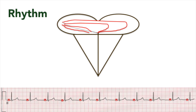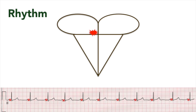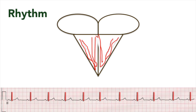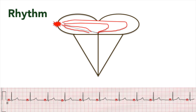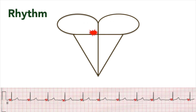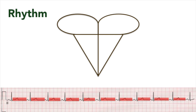On a normal ECG trace, we would expect to see a P wave followed by a brief pause lasting two to five small squares before a QRS complex. If we can't find P waves, or they appear in the wrong place or in the wrong direction, then something isn't quite right and the trace is abnormal.